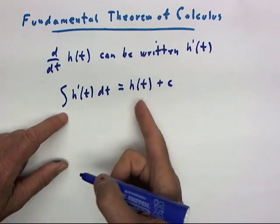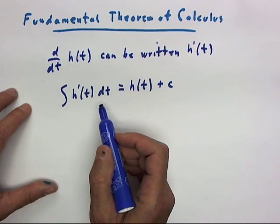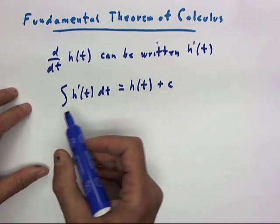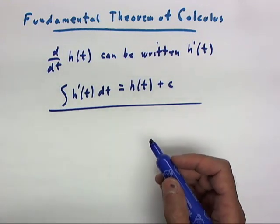So when we integrate the derivative of a function with respect to its independent variable, we get the function plus a constant. And this is something we're all quite familiar with at this point.